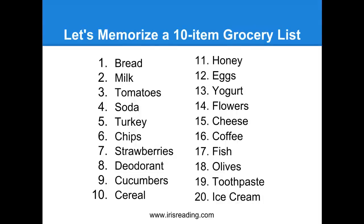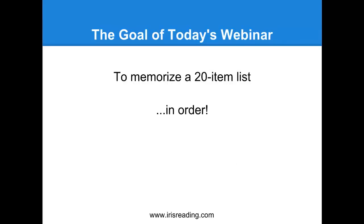How would someone memorize a 20-item list? They might try to write it down a bunch of times, or they might repeat it over and over. If you did it over a thousand times, eventually it will get stuck in your head. However, we need a system that is simpler, more reliable, and faster. Repeating something over and over is known as rote memorization — relying purely on repetition. We're going to use another strategy that involves less repetition, something you can apply to a grocery list of up to 20 items.